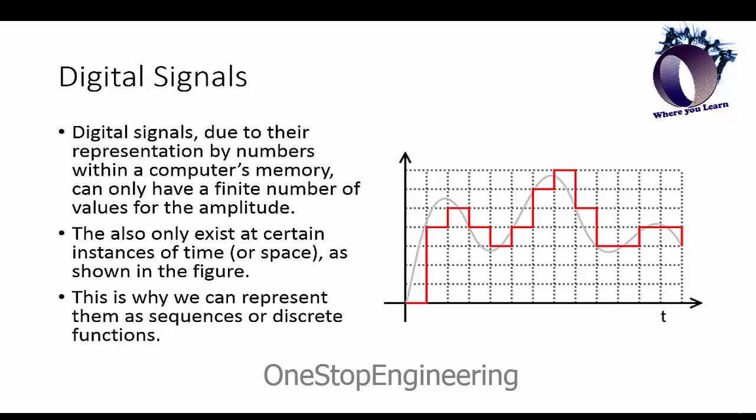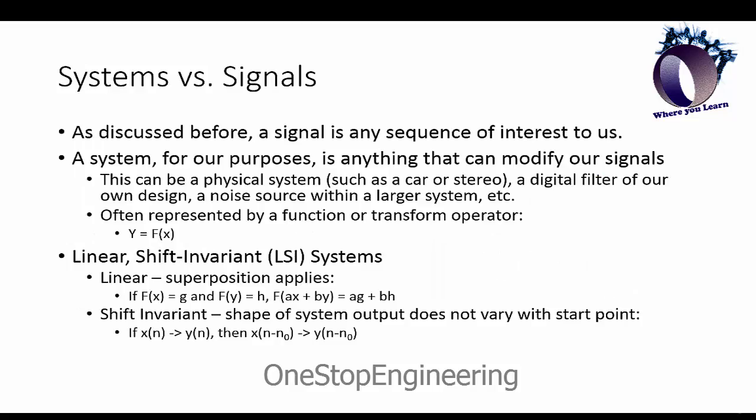Now we have our definition of digital signal in hand, we need to discuss what exactly a system is. For our purposes, a digital system is anything that can modify digital signals, which can be a physical system like a car stereo, a digital filter that we've designed, a noise source within another system, or anything else that can modify our signal.